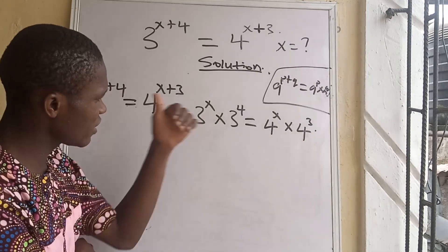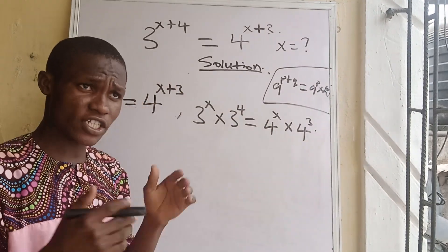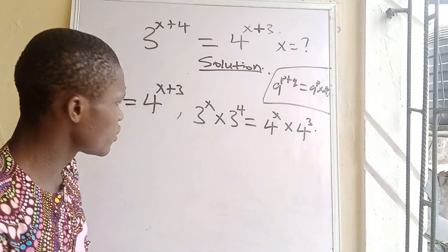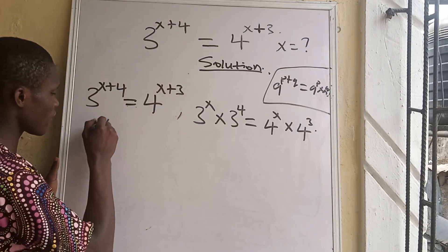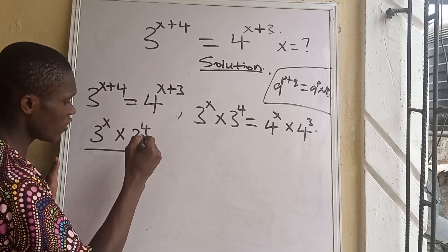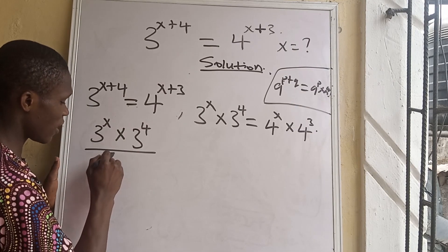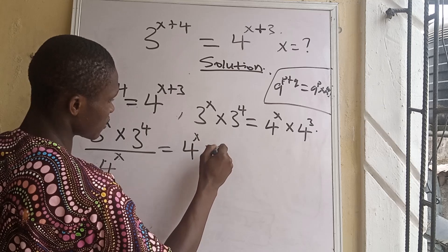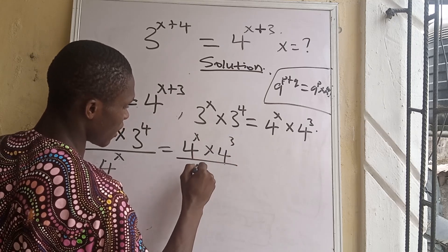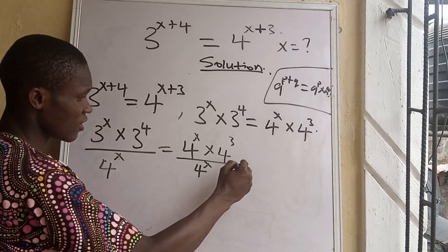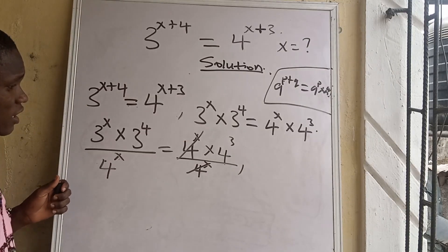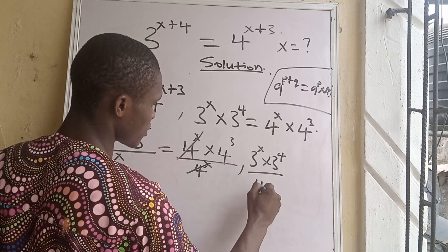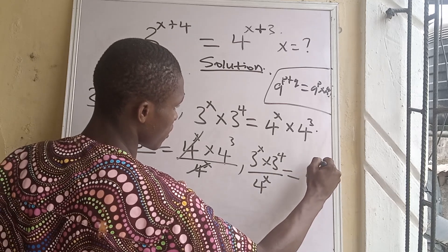In order to separate x from the constant terms, we divide both sides by 4^x. This gives us 3^x times 3^4 all over 4^x, equal to 4^x times 4^3 all over 4^x. The 4^x on the right cancels out, leaving 3^x times 3^4 all over 4^x equals 4^3.